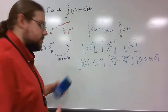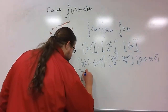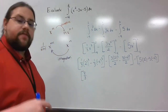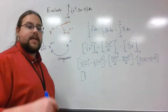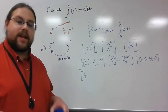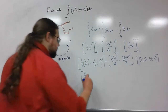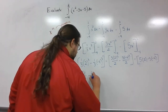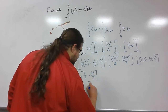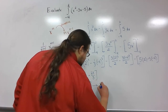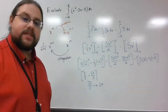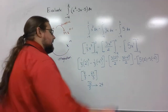2 cubed is 8, so that's 8 thirds. Negative 4 cubed is negative 64, and multiplying by negative one third gives positive 64 over 3. Adding 8 thirds and 64 thirds gives 72 over 3, which simplifies to 24. So the first term evaluates to 24.